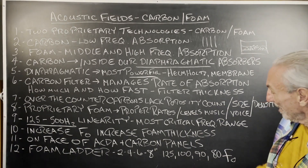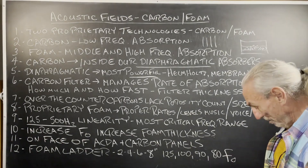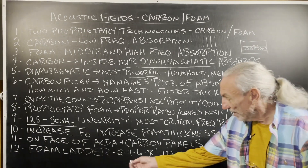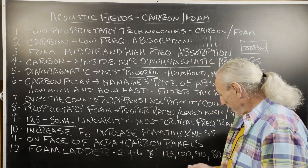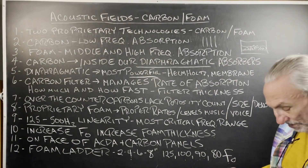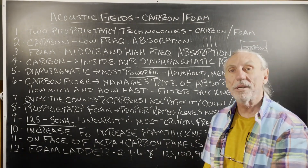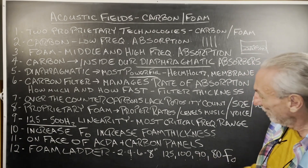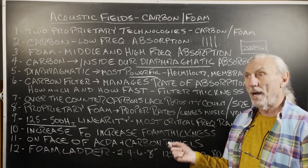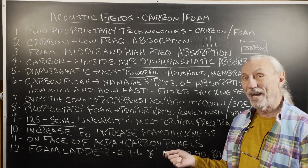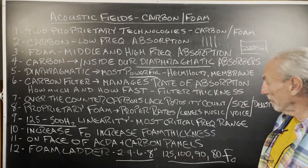If you want linearity and performance, that's what you need for music and voice. You can also increase the resonant frequency by increasing the thickness of our foam technology. A 2-inch starts at 125 Hz, a 4-inch goes to 100 Hz, and then 90 Hz at 6 inches. You can get all the way down to 80 Hz with 8 inches. So you've got some flexibility depending on what you're trying to do in your room. Foam is very lightweight — our 6-inch foam panel that's 6 feet high is about 70 pounds — so it doesn't weigh a lot.